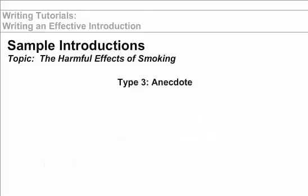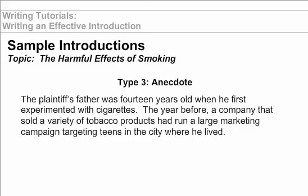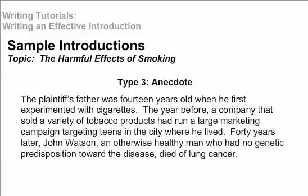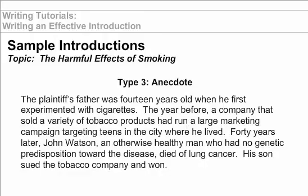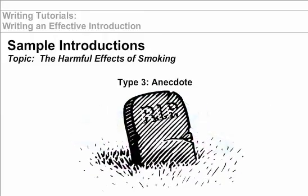Type 3: Offer an interesting anecdote. The plaintiff's father was 14 years old when he first experimented with cigarettes. The year before, a company that sold a variety of tobacco products had run a large marketing campaign targeting teens in the city where he lived. Forty years later, John Watson, an otherwise healthy man who had no genetic predisposition toward the disease, died of lung cancer. His son sued the tobacco company and won. A brief anecdote or story can capture the attention of the reader through the use of concrete details.